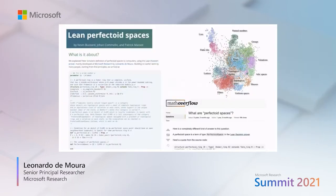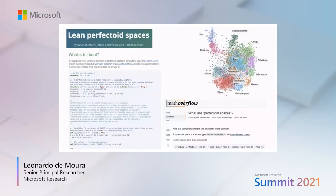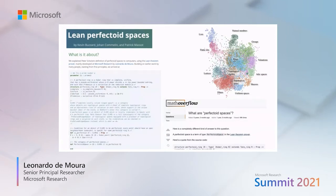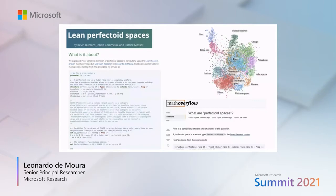Mathlib is also the foundation for more complex projects like the Lean Perfectoid Spaces, developed by Kevin Buzzard, Johan Commelin, and Patrick Massot. Here, this group explained what Peter Scholze's definition of perfectoid space is to Lean. This is a very complex definition — Fields Medal level mathematics. This object is extremely complex and it's really hard to explain using informal language. But here you have a digital, formal version of these objects.